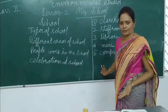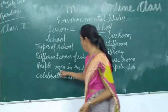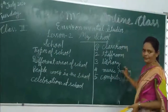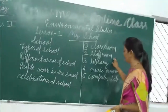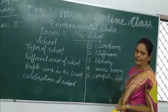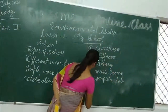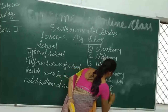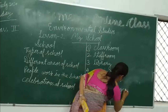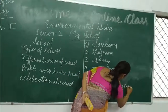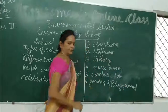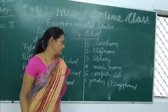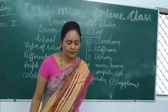Now, children, the different areas of school are: classroom, staff room, library, music room, computer lab. We can also add garden and playground. In the garden and playground, we go to play, we enjoy, and we do lots of fun.